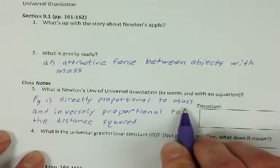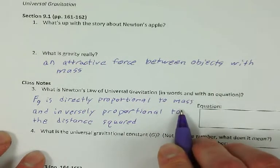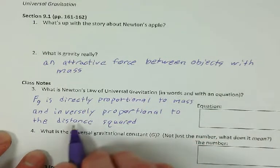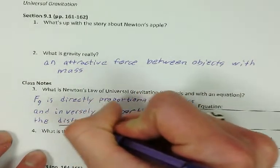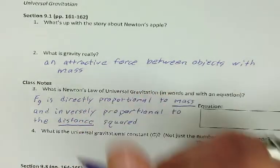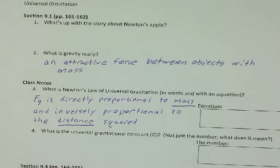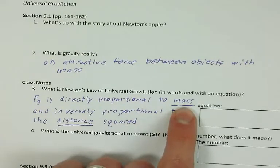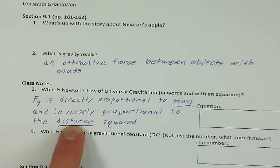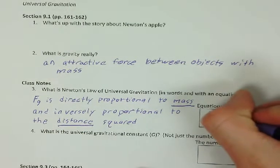Now this mass is the mass of the objects that are being attracted to each other, and this distance is the distance between those two objects. So if we're talking about the earth and the moon, then the mass would be the mass of the earth and the mass of the moon, and the distance would be the distance between the earth and the moon.